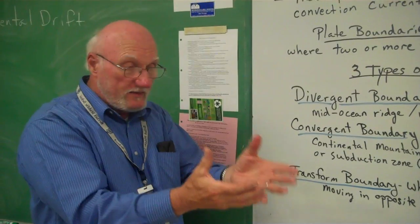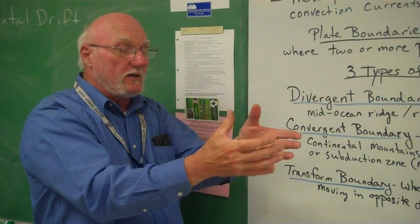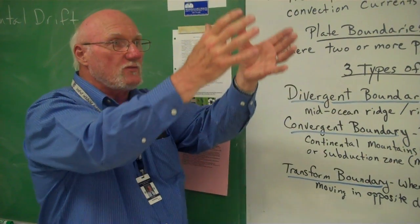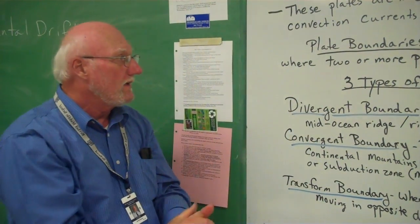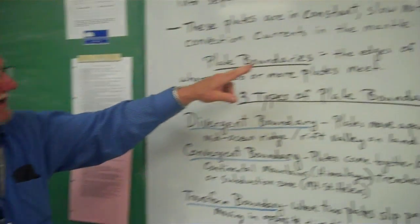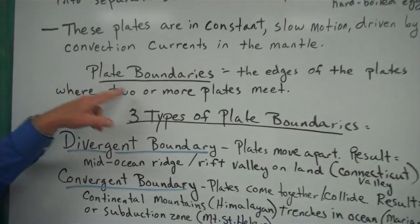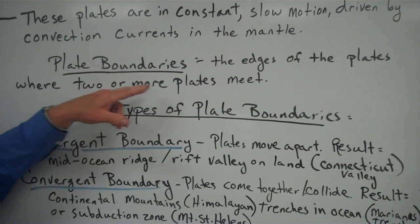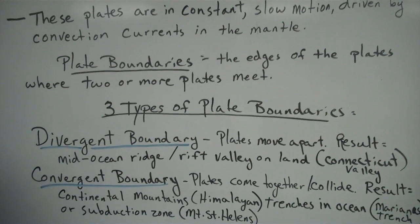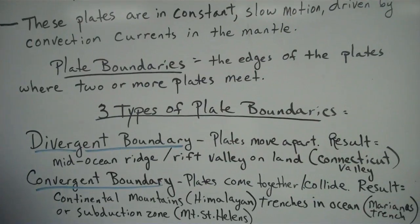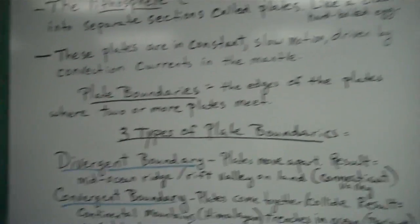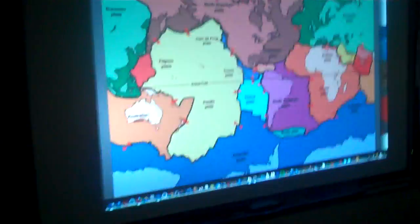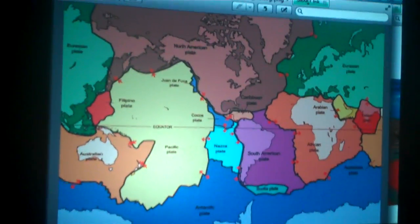The oil inside the lava lamp gets heated, becomes less dense, and rises. When it hits the top, it cools down and comes back down again. So the plate boundaries are the edges of the plates where two or more of these plates meet. We're going to show you the map and how we have different plates moving in different directions.